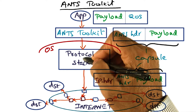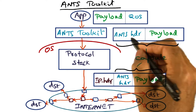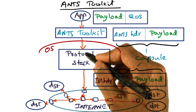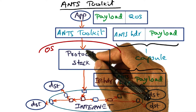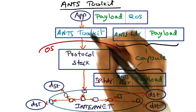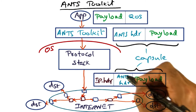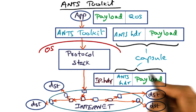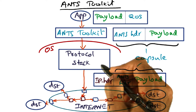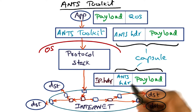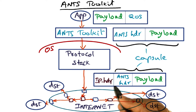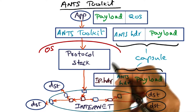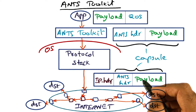The normal operating system protocol stack looks at this as the payload being given to it. It knows the destination address where this has to go, so it sticks on the IP header. The new packet generated by the protocol stack has the IP header, and the rest of it is payload as far as this protocol stack is concerned.